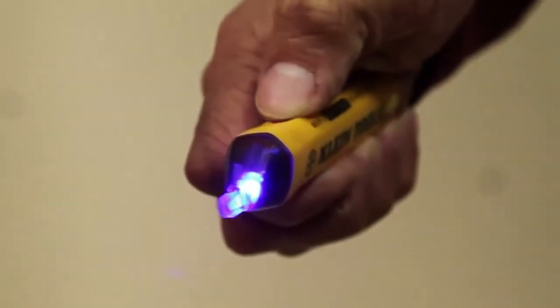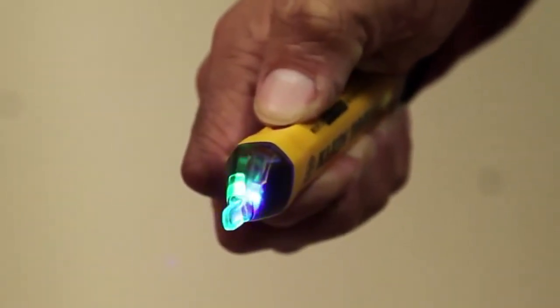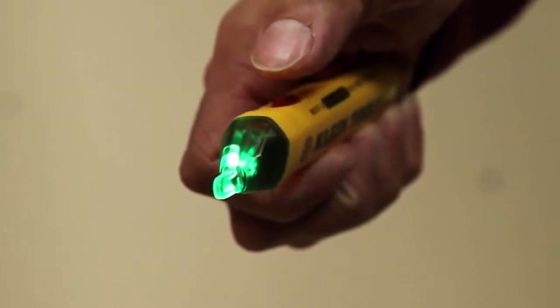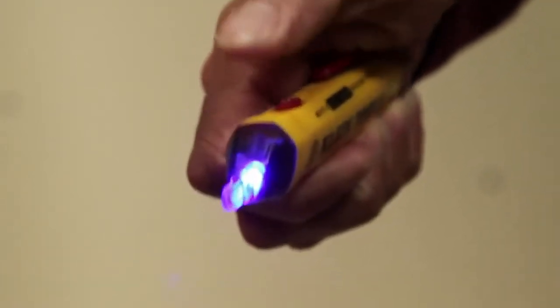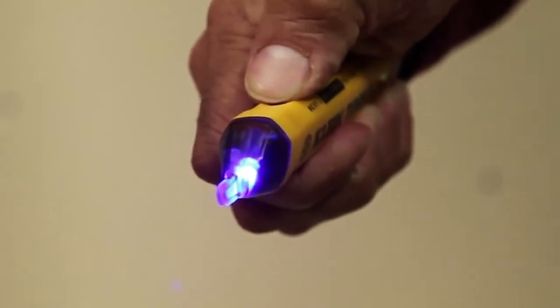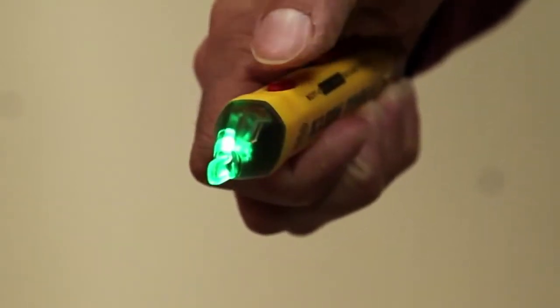Unlike competitive non-contact voltage testers, the NCBT2 can detect between the two ranges automatically. When the blue LED light is illuminated, the NCBT2 is in dual range mode and can automatically detect both standard and low voltages.